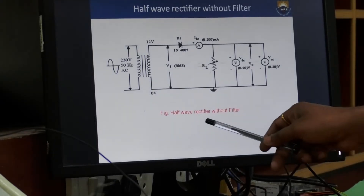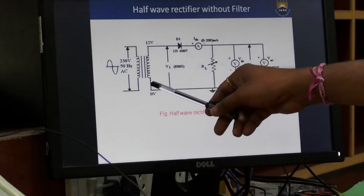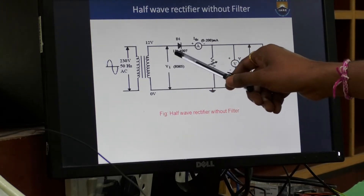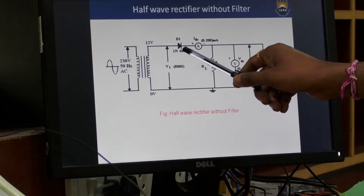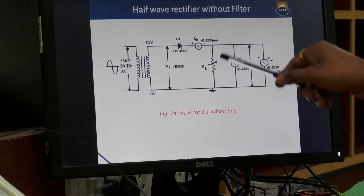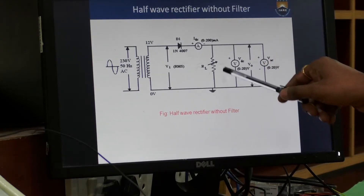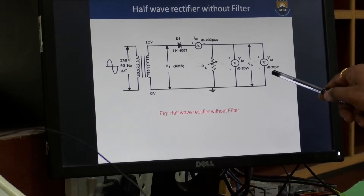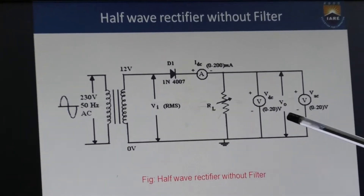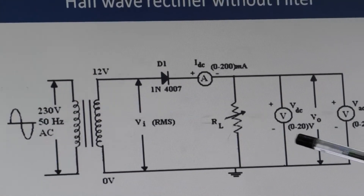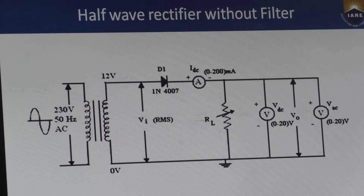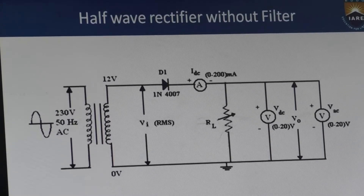The required circuit diagram is as follows: first we are going to perform a half-wave rectifier without filter. This is the transformer. From the transformer secondary winding, we connect to the diode anode. The diode cathode is connected to ammeter positive. Ammeter negative is connected to load resistance. Across this load resistance, we measure the DC output voltage, AC output voltage, as well as the graphical output signal V0P. This is the required circuit diagram for a half-wave rectifier without filter.